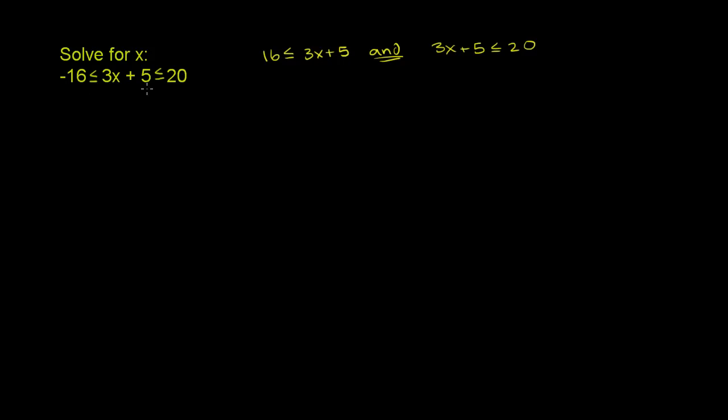So let's subtract, since we want to isolate an x in the middle of this compound inequality. Let's subtract 5 from all three sides, from the left, the middle, and the right. And we don't have to do anything to the inequalities, because we're just shifting it. We're just subtracting a number. If you add or subtract, you don't have to do it. You only have to swap inequalities when you multiply or divide by a negative number.